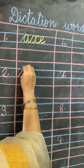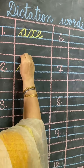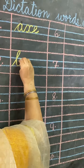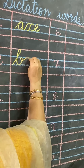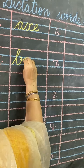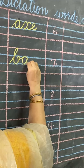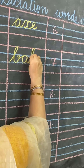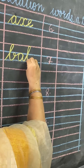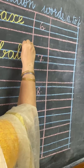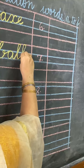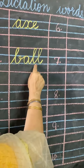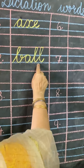B for Ball. B will come in upper three lines. A will come in two middle lines. Then L — L will come in upper three lines. Once again L. B, A, L, L — ball.